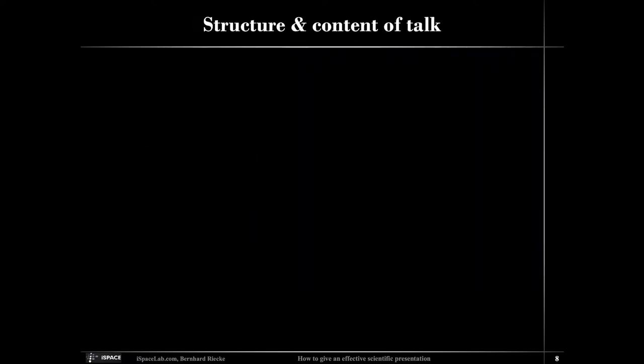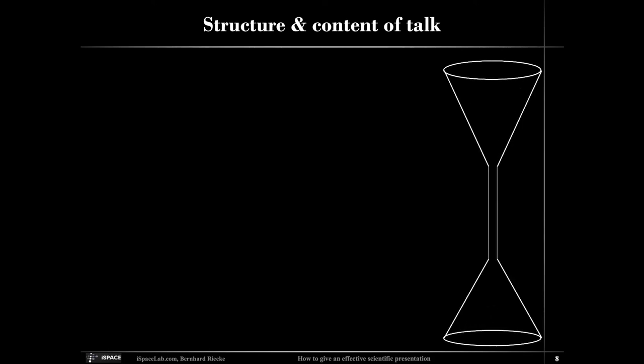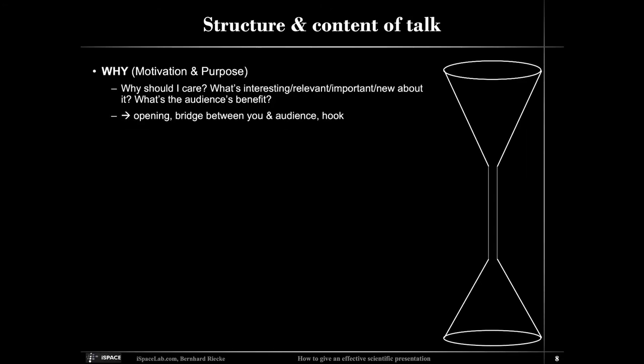One way to look at the structure of a talk is the double hourglass idea, where you start broadly at the top and narrow in — trying to get people excited about your topic, which is typically fairly narrow, like the middle of the hourglass. You try to get them to understand why it might be relevant, why they might want to listen, what the audience benefits are. You're bridging between you and the audience — having some kind of hook, something like velcro that sticks, if you can relate to their experience.